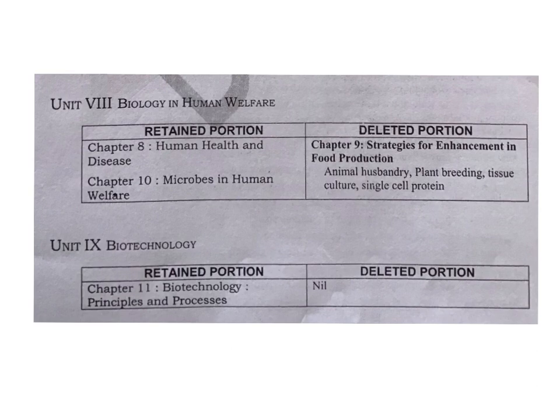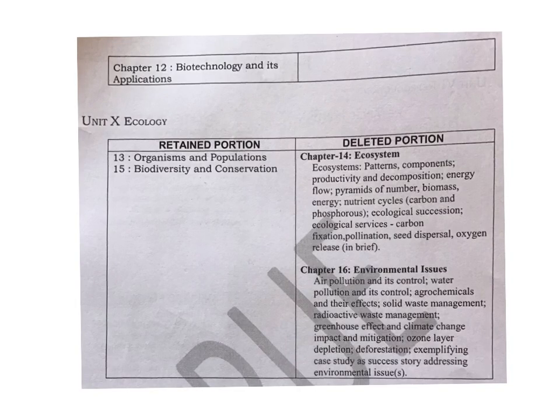Unit 9, biotechnology — in that, both the chapters are retained; nothing removed, nothing deleted. Biotechnology, principles and processes is Chapter 1. What are the instruments or materials used for biotechnology, what is biotechnology — some examples we have to study. And the 12th chapter, biotechnology and its applications — where we use biotechnology — same retained.